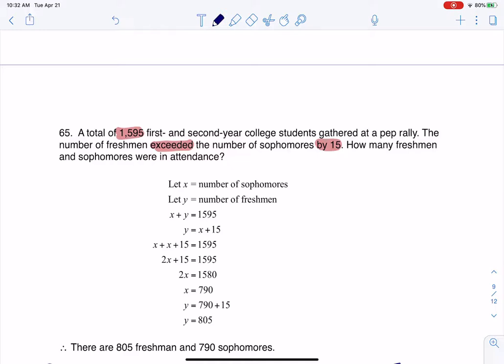Here are my two variables. I'll let x be sophomores, y be freshmen. We were told the total, x plus y, is going to be 1595. And the number of freshmen, that's my y, exceeded the number of sophomores by 15, so that implies y equals x plus 15.